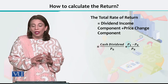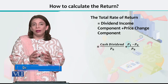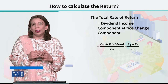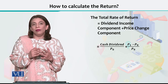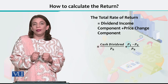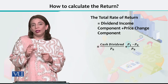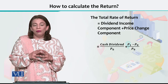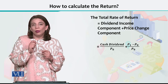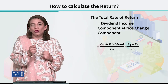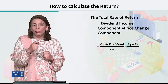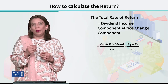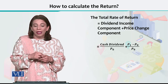The first component is the dividend income component and the other is the price change component. The dividend income component means that by the end of the financial year, if any company has announced a dividend, we divide it by the initial price — P0, the price at which that particular stock was purchased — to get the dividend income component.